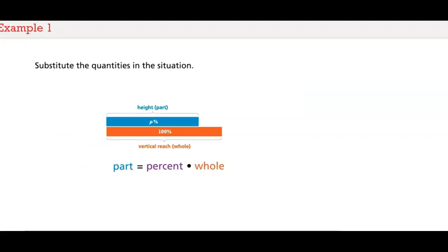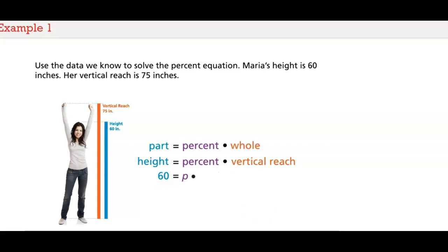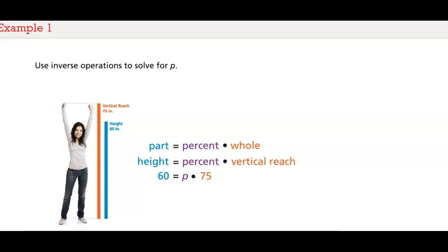Now that we have an equation, substitute the quantities in this problem situation. Height equals percent times vertical reach. We can use the data we know to solve the percent equation. Maria's height is 60 inches, which equals percent (p) times Maria's vertical reach of 75 inches. Use inverse operations to solve for p. 60 over 75 equals p times 75 over 75, so 80 hundredths equals p.